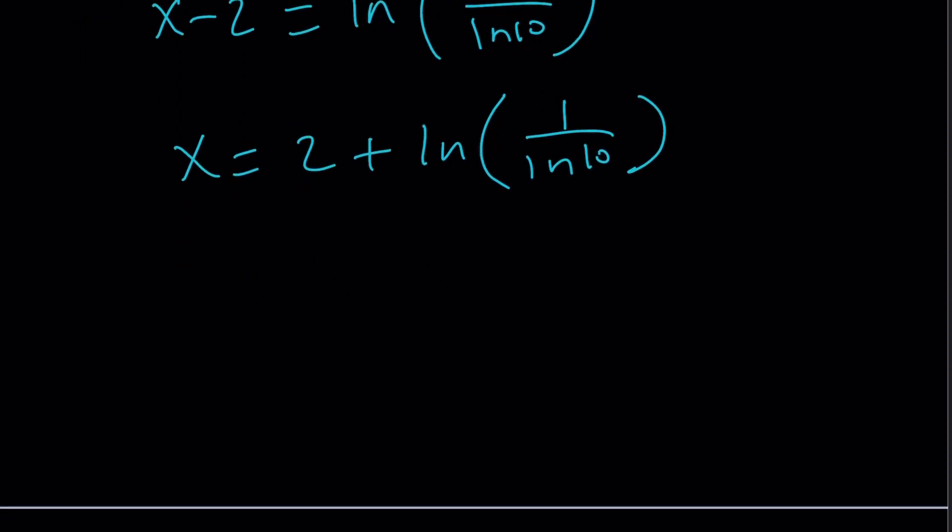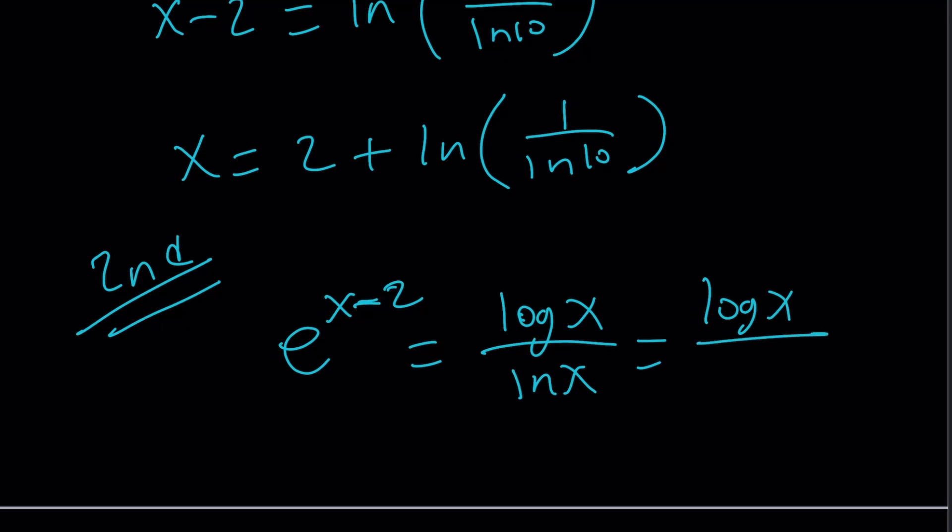And the second method, basically, pretty much uses the same idea. But instead, instead of changing the log, it changes the ln. So, what I can do with this is I can just take this ln and write it as log x over log 10.